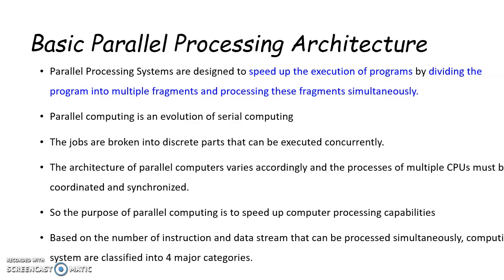To achieve parallelism, the system should have two or more processors operating concurrently. Parallel computing systems are more difficult to program because there will be multiple CPUs and the multiple CPUs must be kept synchronized. So the purpose of parallel computing is to speed up computer processing capabilities.